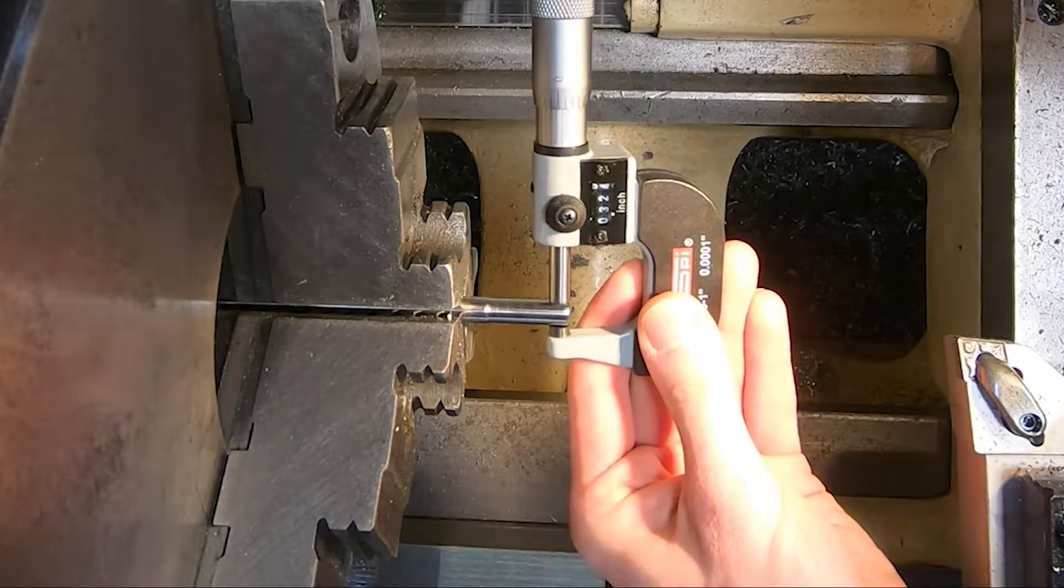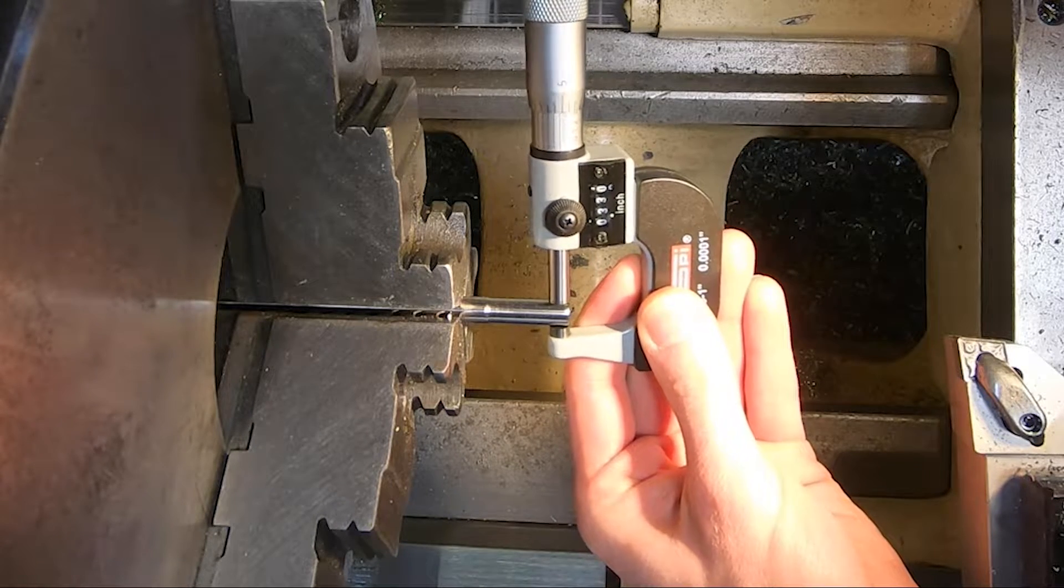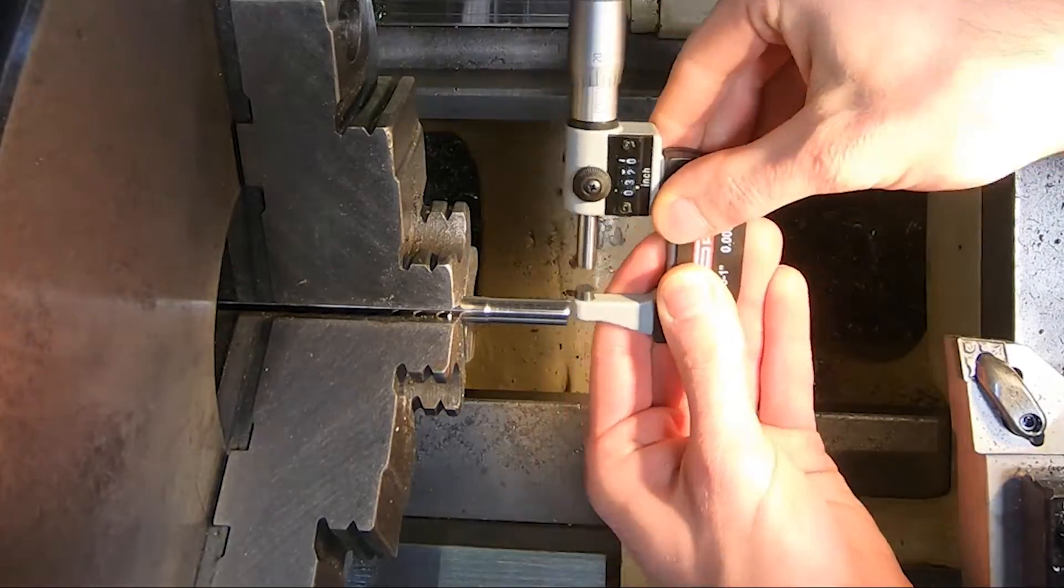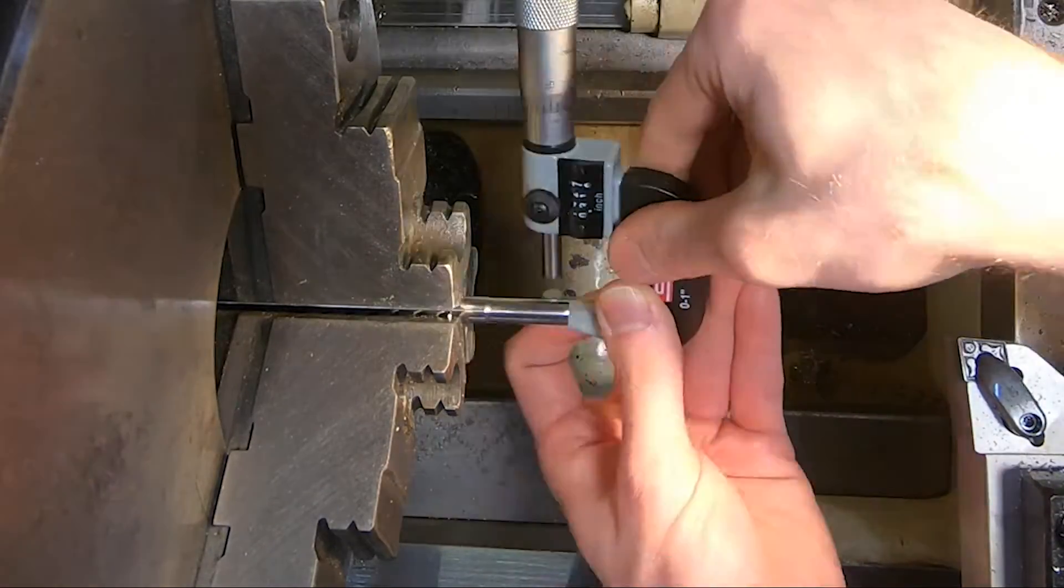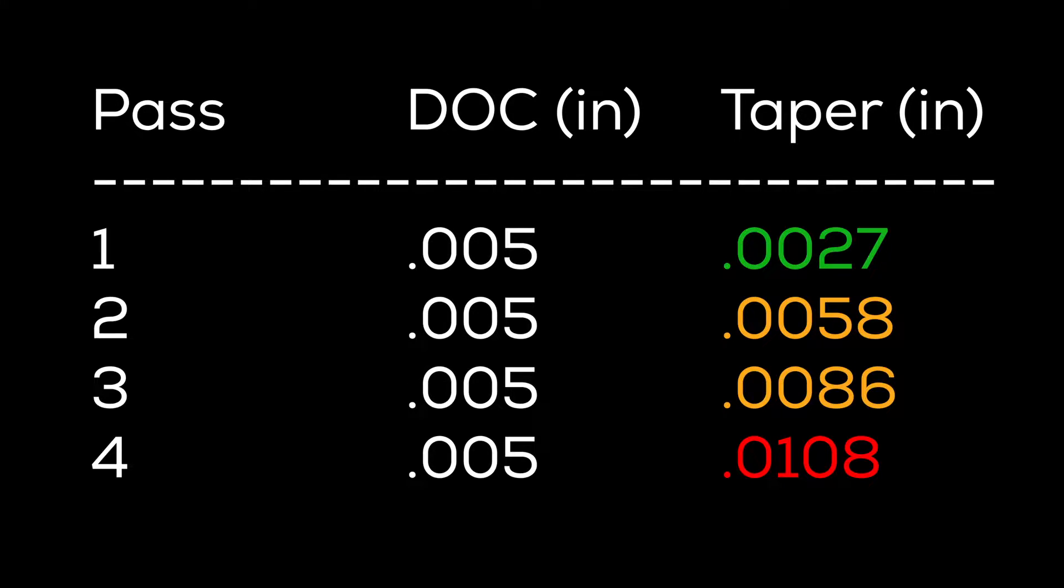Between each pass, we measure the diameter in three places with mics, and we wanted to quantify if we were cutting on size and whether or not there was any taper. These are the results of that test. You can see by the fourth pass there's some pretty significant taper, and it gets progressively worse with each successive pass.